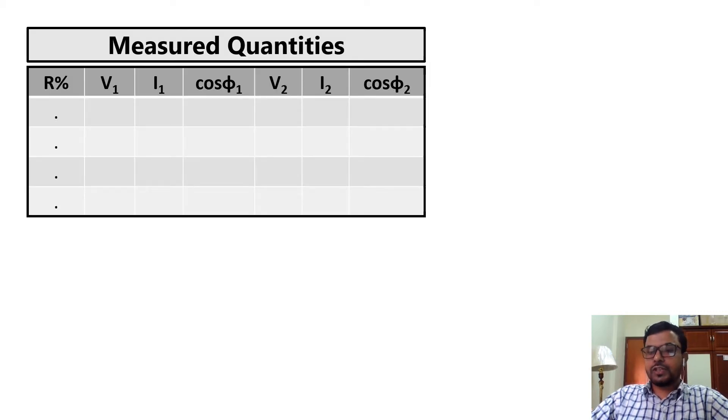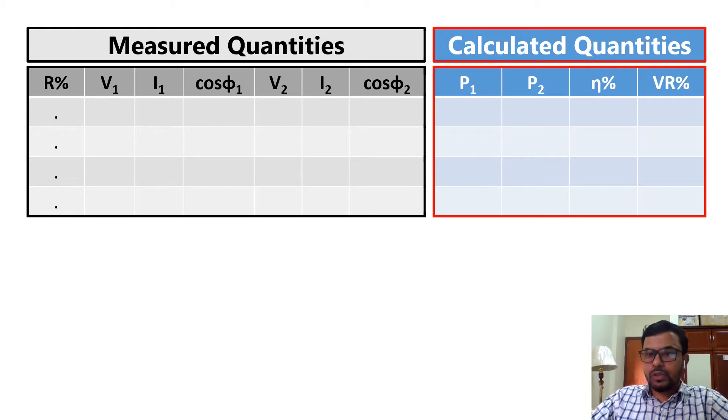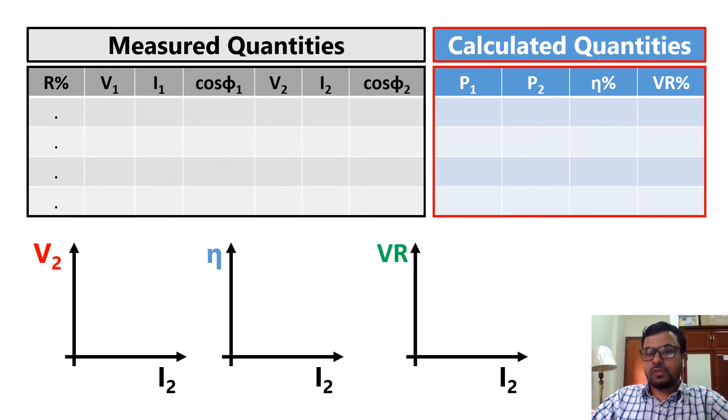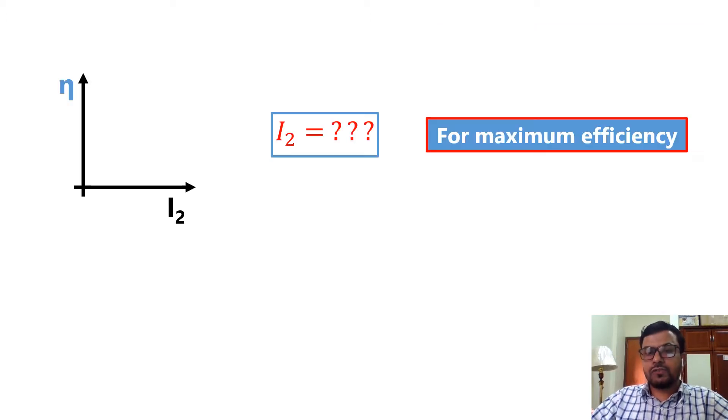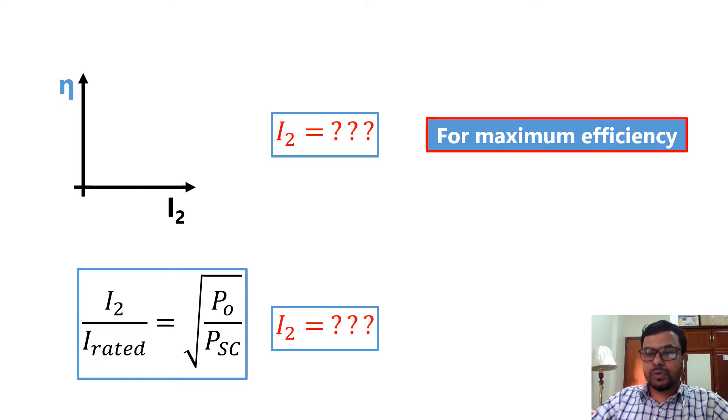From this experimentation, we have measured primary and secondary voltages, currents, and power factors. Now, using the formula available in the manual, we have to calculate P1, P2, efficiency, and voltage regulation of the single phase transformer. Then, we need to plot V2 versus I2, efficiency versus I2, and voltage regulation versus I2. Now from the efficiency versus I2 plot, you need to determine the value of I2 corresponding to maximum efficiency. For verification, you can also calculate I2 using short circuit power, open circuit power, and rated secondary current.